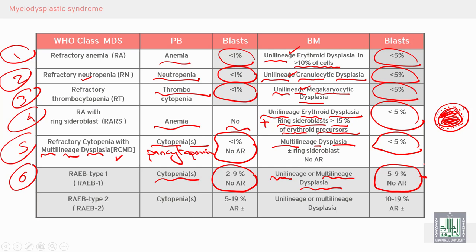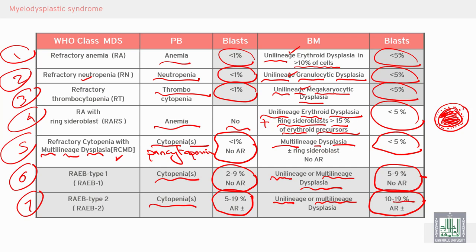The last condition is refractory anemia with excess blasts type two — also cytopenia with unilineage or multilineage dysplasia, but the blast percentage is characteristic: in the peripheral blood from five to nineteen percent, plus or minus Auer rods; in the bone marrow from ten to nineteen percent, plus or minus Auer rods. If the percentage of blasts exceeds nineteen percent, it will be classified as acute leukemia.